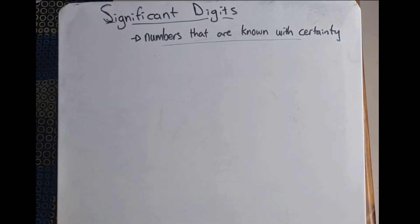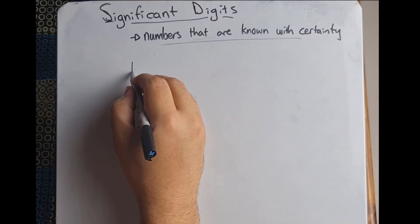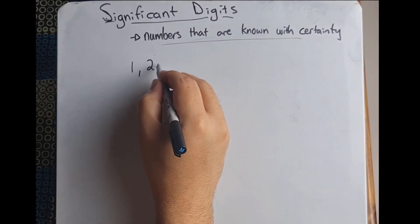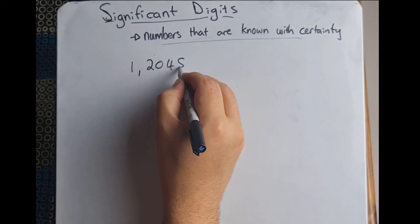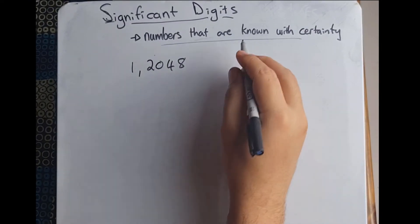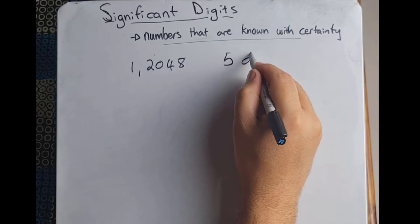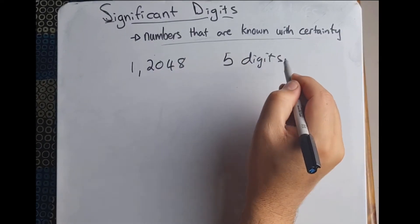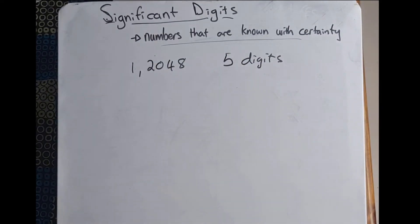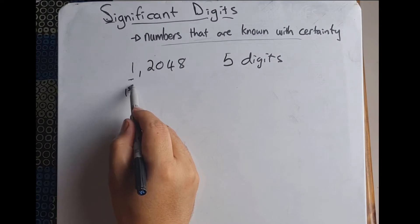Hi there learners, and in today's video we're going to be talking about significant digits. When we talk about significant digits, we are talking about numbers that are known with certainty. So for example, if I have 1,2048, we can see that that has five digits to it.